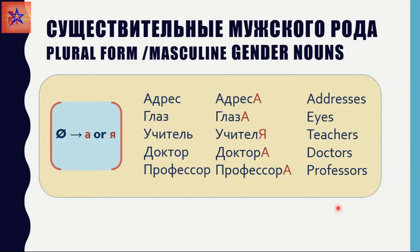The irregular forms can be divided according to the gender, and most of the irregular forms belong to the masculine. The first group would be the consonants to which А or Я sounds are added. Let's see the examples.